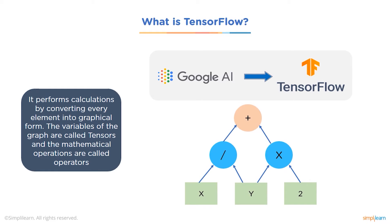What does dataflow mean? It means that calculations are performed by converting every element into graphical form. The variables of the graph are called tensors and mathematical operations are called operators. In the computational graph shown, x, y, and 2 are the variables — also called tensors — and division, multiplication, and addition are the operators. This graph shows a calculation where x and y are divided, y and 2 are multiplied, and the results are added to give the final output.